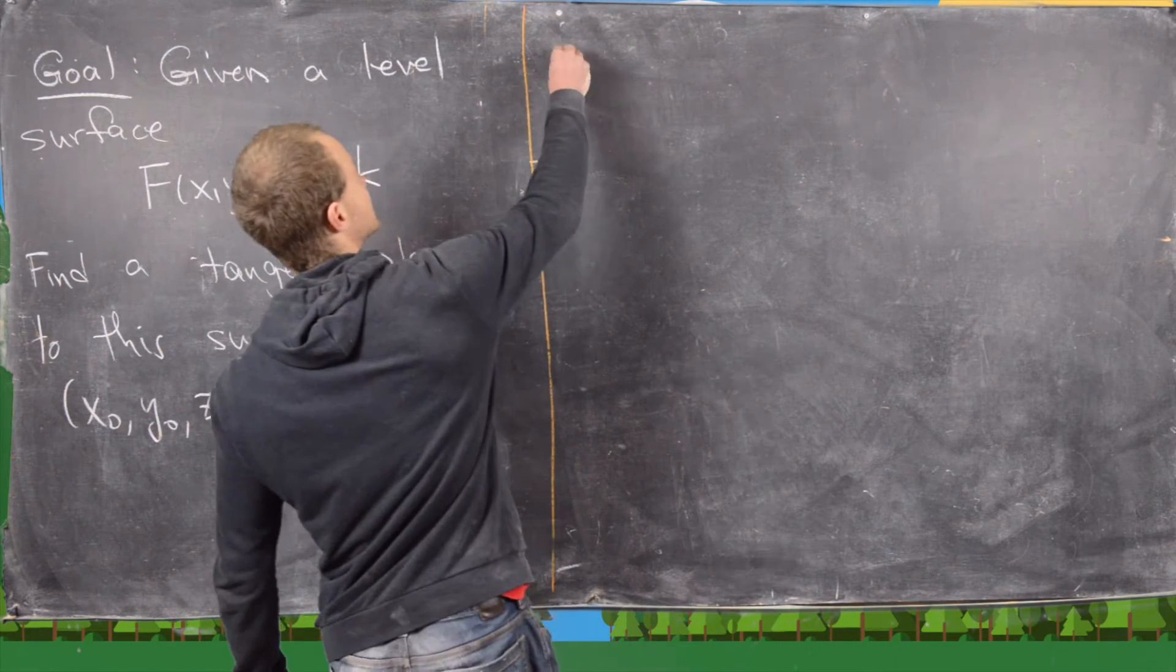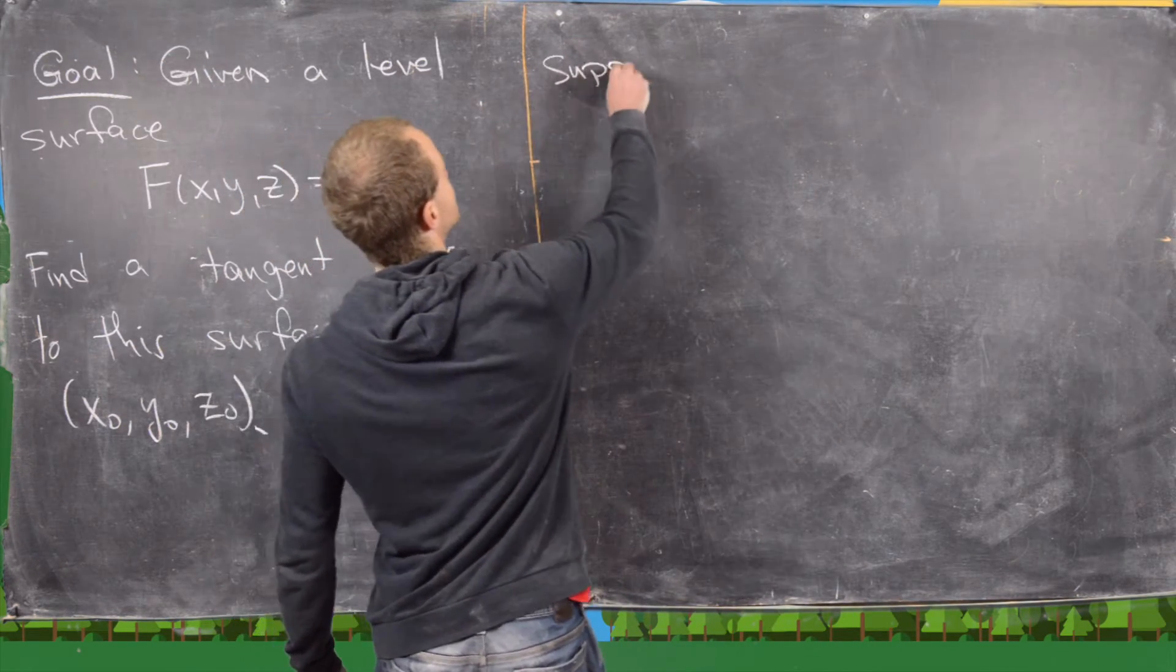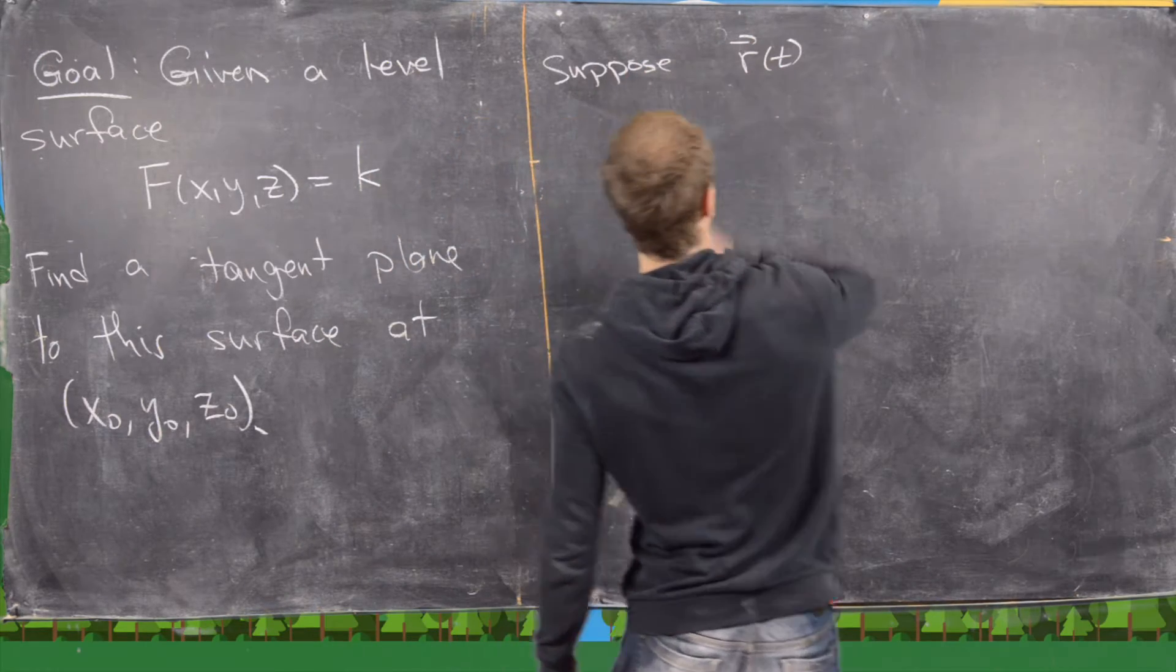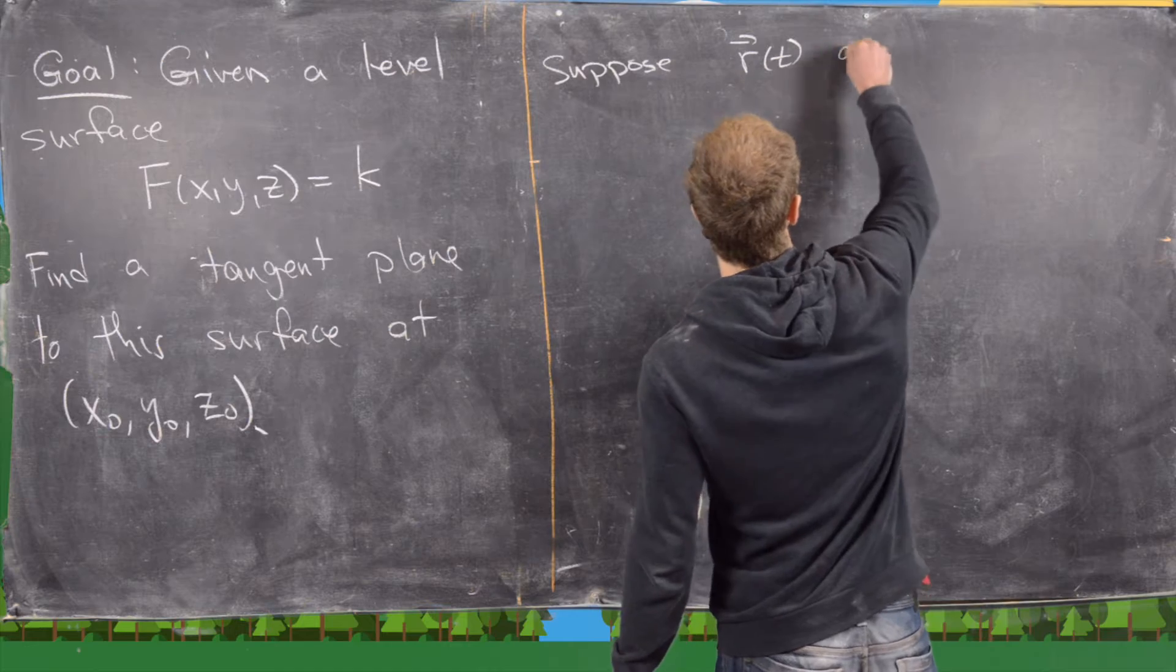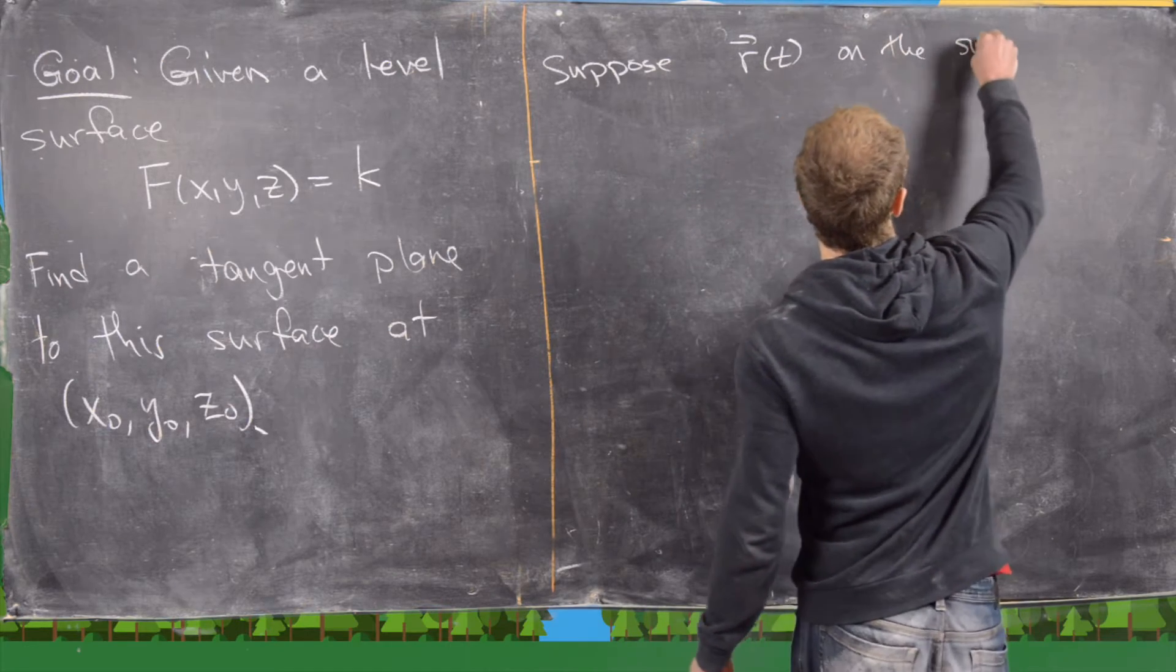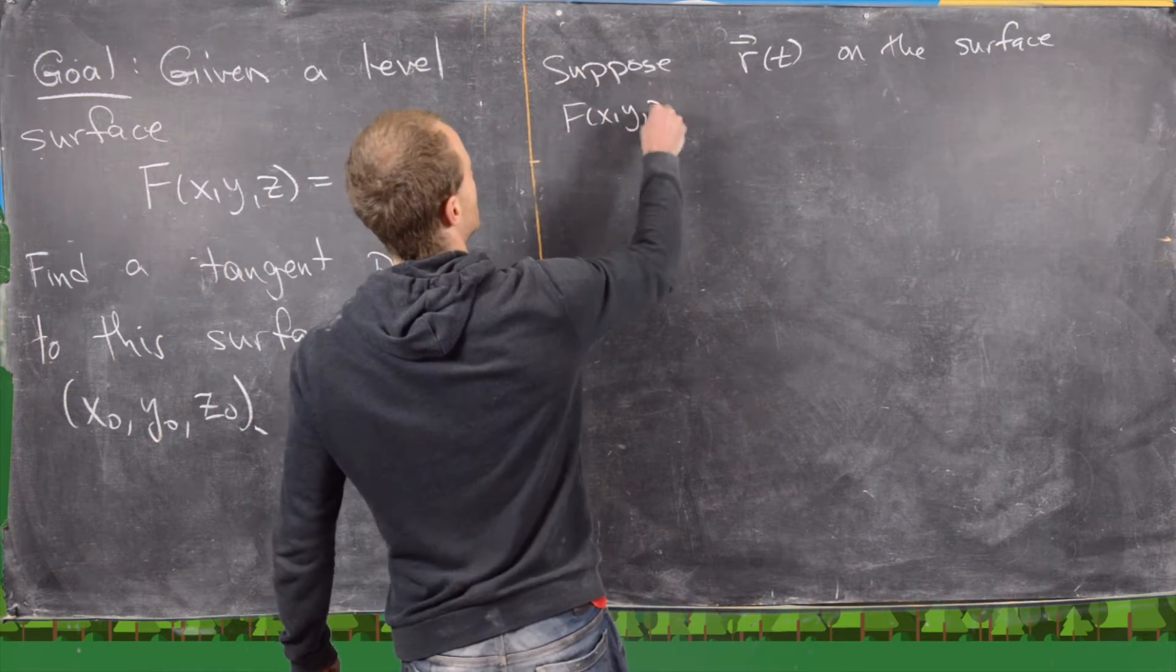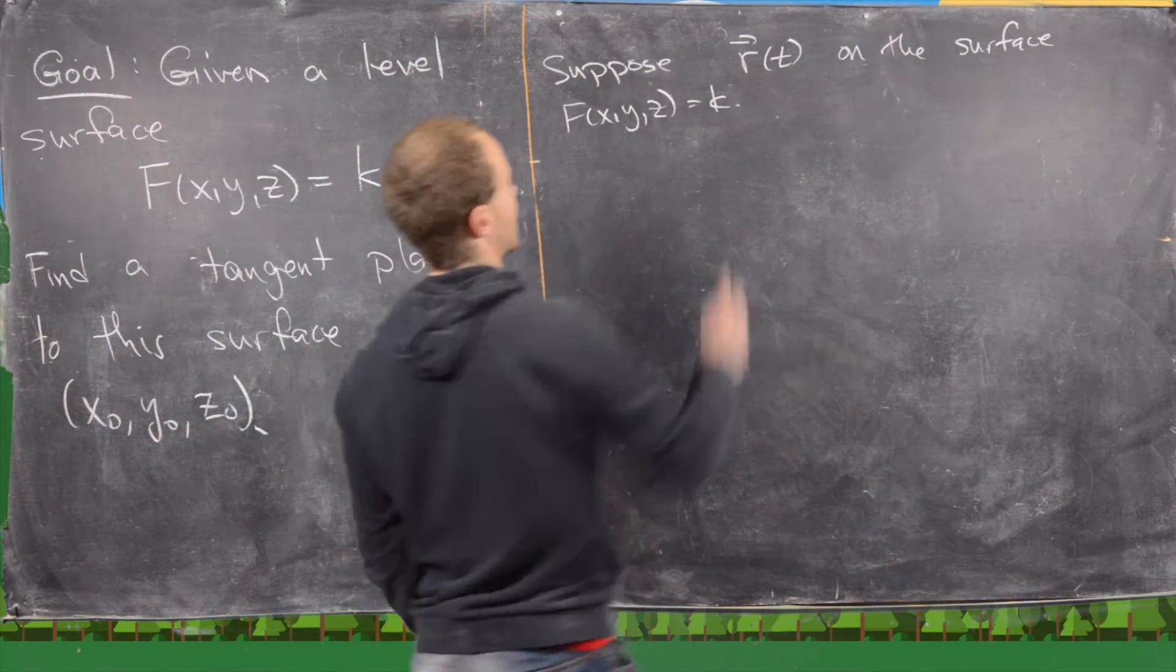So how we're going to do this is in the following way. Let's suppose that we have a curve, r of t, on the surface defined by f, x, y, z equals k.